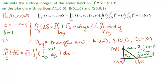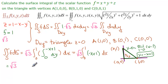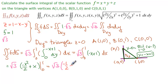So our surface integral equals √3 times the integral from 0 to 1 of the integral from 0 to (-x+1) of dy dx. The inner integral gives (-x+1). Integrating with respect to x: √3 times [-x²/2 + x] from 0 to 1 equals √3 times (-1/2 + 1) equals √3 times 1/2. So the answer is √3 over 2.